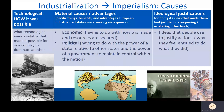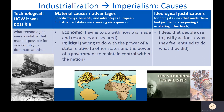For the causes of imperialism, we need to look at technological causes — like how it was possible to do this, what technological advances were available that made it possible for one state to dominate another that was really far away. Next, we need to look at the prime motivator: material causes or material advantages, which are specific things, benefits, and advantages that European industrialized states were seeking through expansion — like what was in it for them. We'll break this down into economic causes and political causes: what advantage did imperial conquest have politically, having to do with the power of a state relative to other states and the power of a government to maintain control within their own nation.